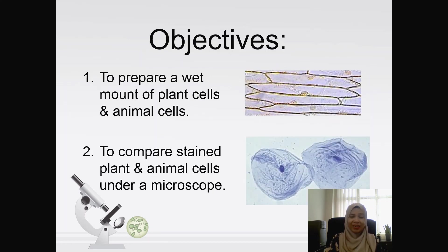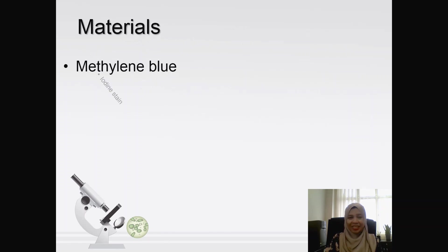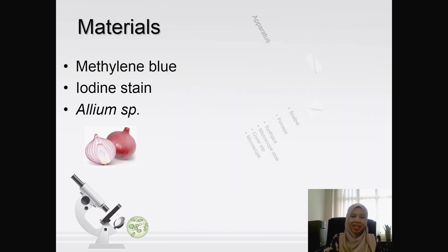Shown here are the images of plant cells and animal cells under a microscope. The materials needed include two types of staining reagent: methylene blue and iodine stain, and also the specimen which is the onion.